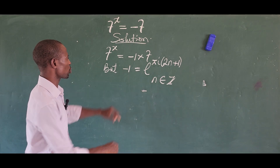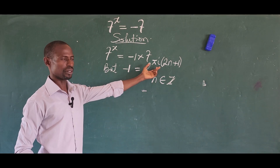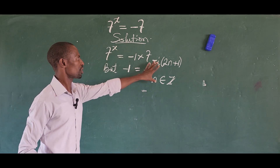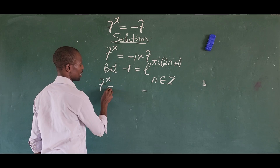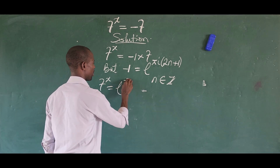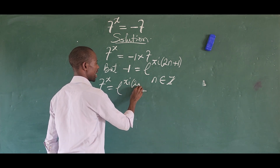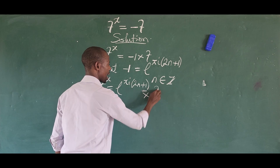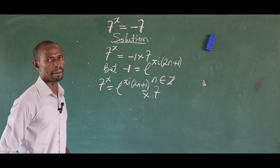Since we have minus 1 equal to that expression, we can substitute it in place of minus 1. This gives us 7 to the power of x is equal to e raised to the power of πi(2n+1), times our existing 7.